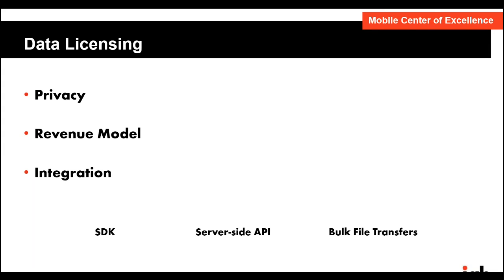In terms of integration, it's generally pretty easy. There are SDK integrations — companies like Venpath and Pipio will have an SDK you implement, and that company will collect the data via the SDK and license it on your behalf, giving you a revenue share. That's the easy way. On the other end of the spectrum is a bulk transfer, where you package up the data, agree on a format, and send it out. There's a wide range of options, and most of it is pretty easy. That's data licensing in a nutshell — a second way of monetizing your data with a growing ecosystem for this type of data.